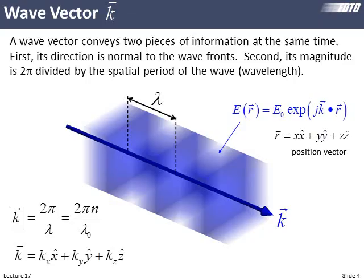Last time we introduced the wave vector, which carries two pieces of information: it points in the direction the wave is moving — perpendicular to the wave fronts — and its magnitude is 2π divided by the period of the wave. If we know the frequency, the free space wavelength is fixed, and we can think of the magnitude of k as conveying refractive index n, since 2π over the free space wavelength is a constant.